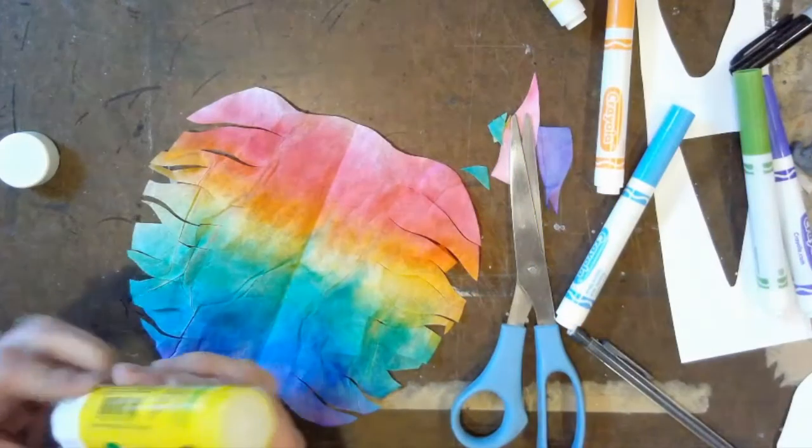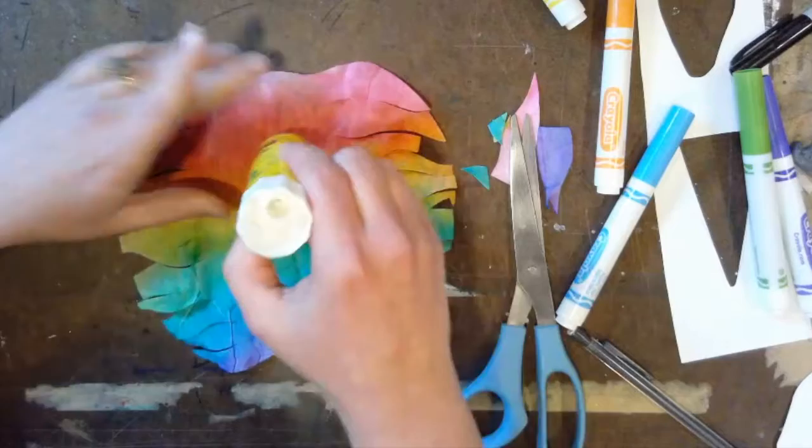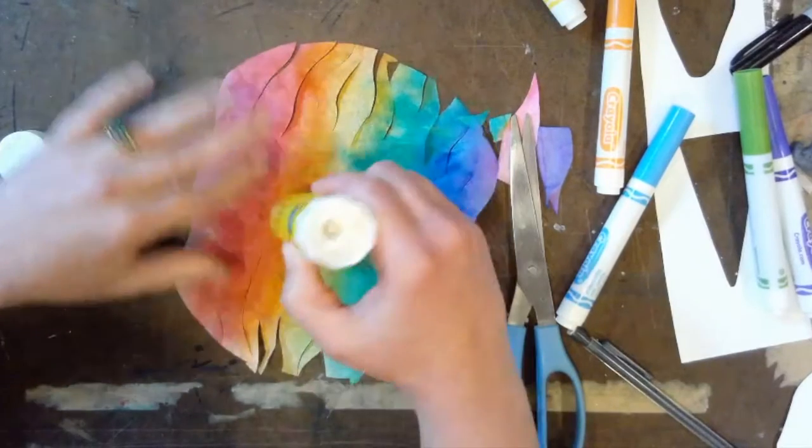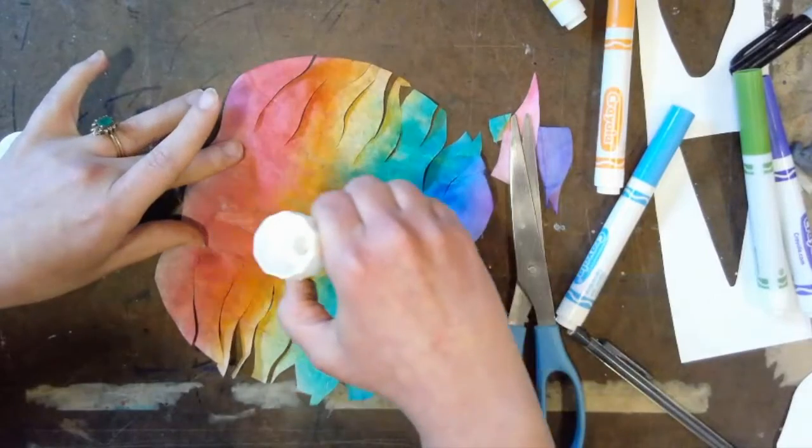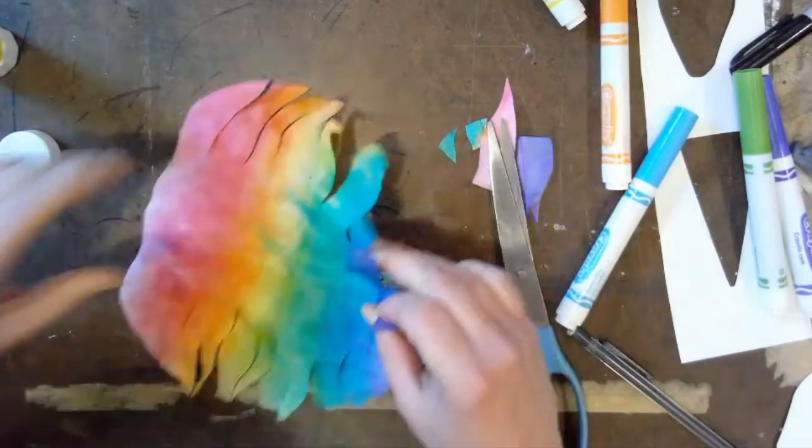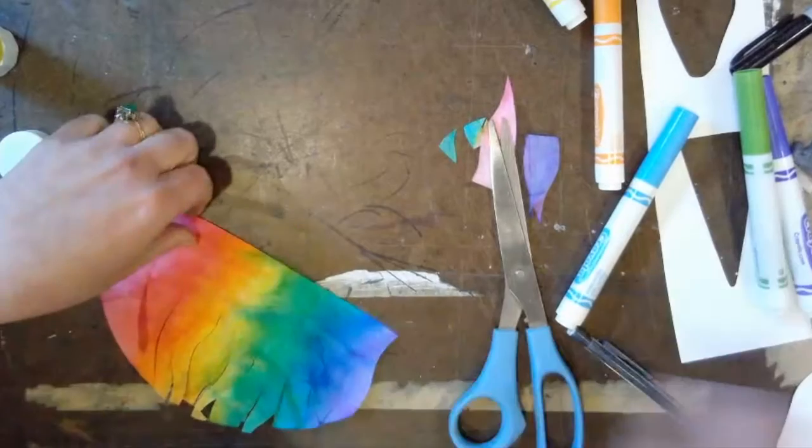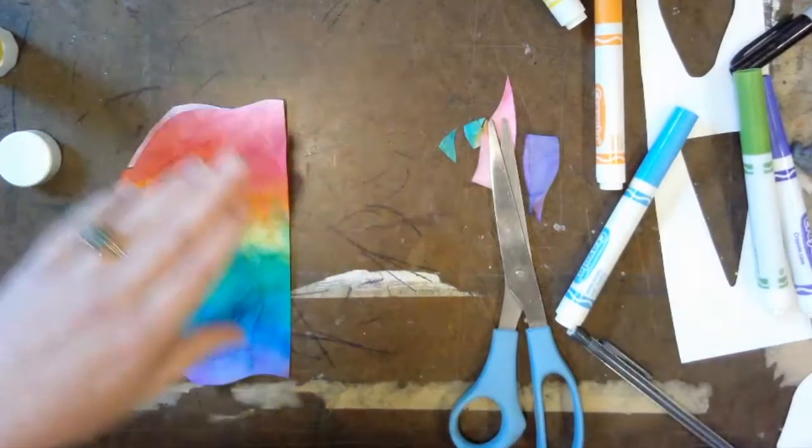When you're done cutting, open it back up, and I'm just going to do a little bit of glue right by the crease. Be gentle with this since it is a coffee filter - it could rip more easily. Then I will fold it back down. That will help it kind of stay together.